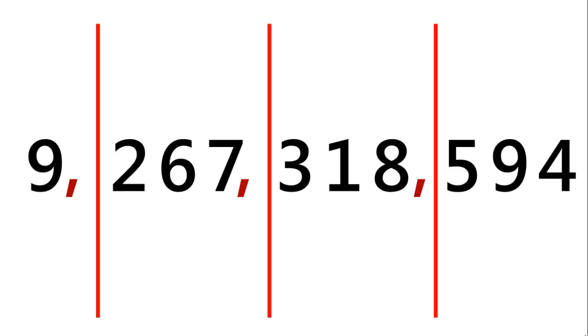To make it easier to read whole numbers, commas are used to separate digits into groups of 3 starting from the right. We call each set of 3 digits a group or period.